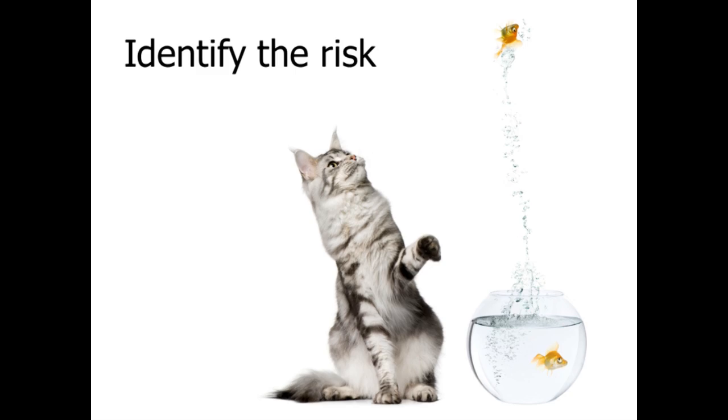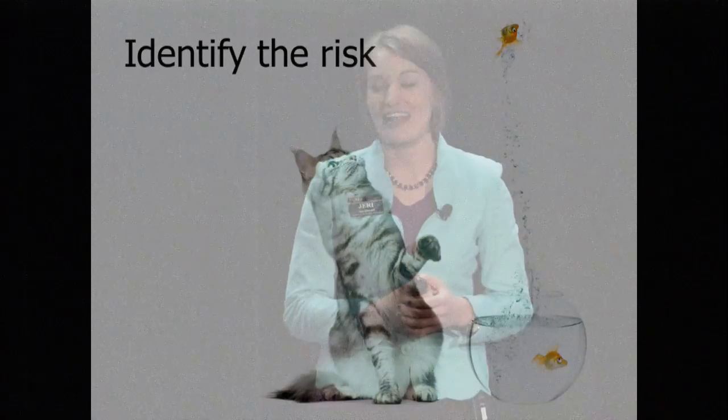First, we have to identify the risk. I found this picture and couldn't help but use it, because it shows obvious risks — like a cat — but also other risks, such as knocking over the fishbowl and being out of water. You also need to know your risk tolerance: decide whether you're the leaper or the swimmer.